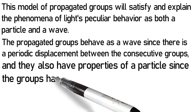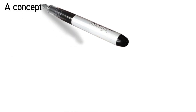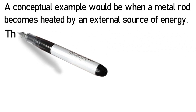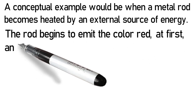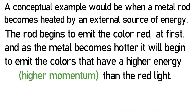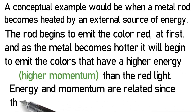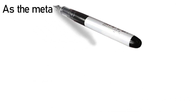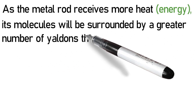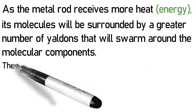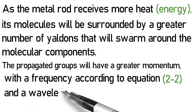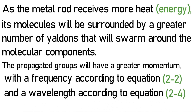The propagated groups behave as a wave since there is a periodic displacement between the consecutive groups, and they also have properties of a particle since the groups have a mass with a velocity. A conceptual example would be when a metal rod becomes heated by an external source of energy. The rod begins to emit the color red at first, and as the metal becomes hotter it will begin to emit the colors that have a higher energy and higher momentum than red light. Energy and momentum are related since they both have a mass with a velocity.